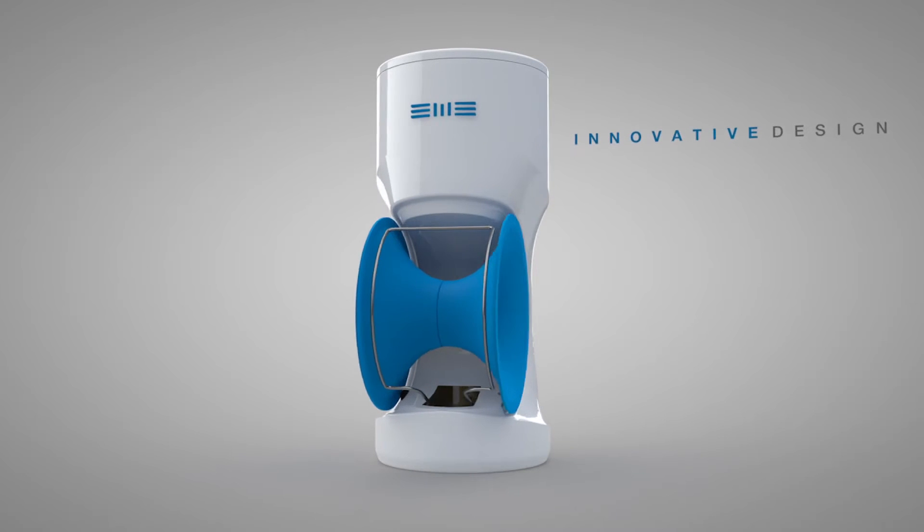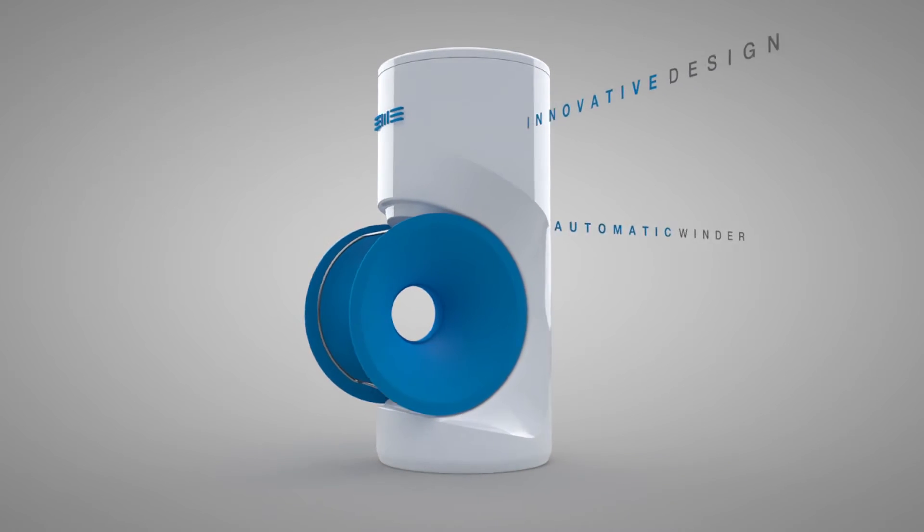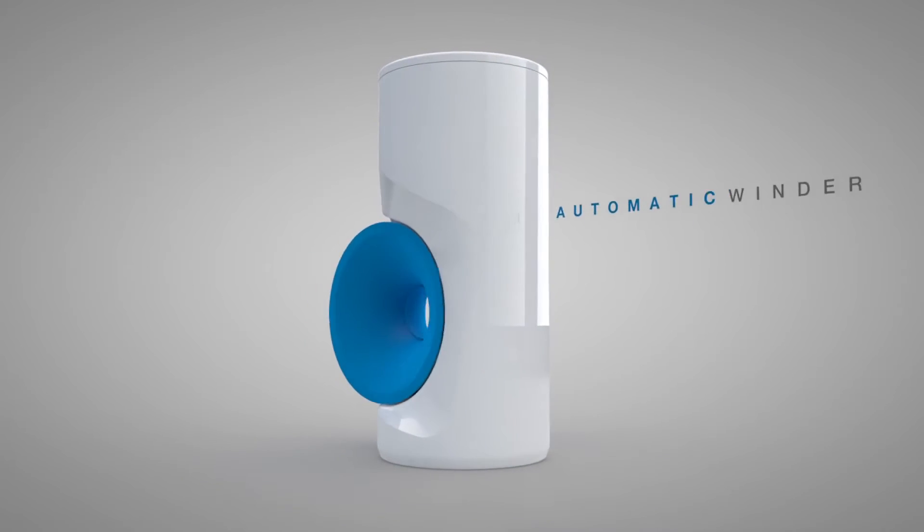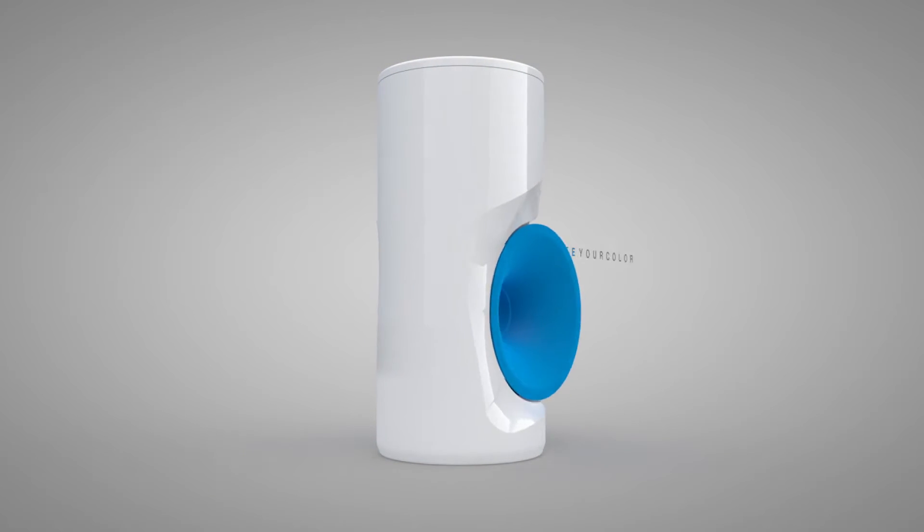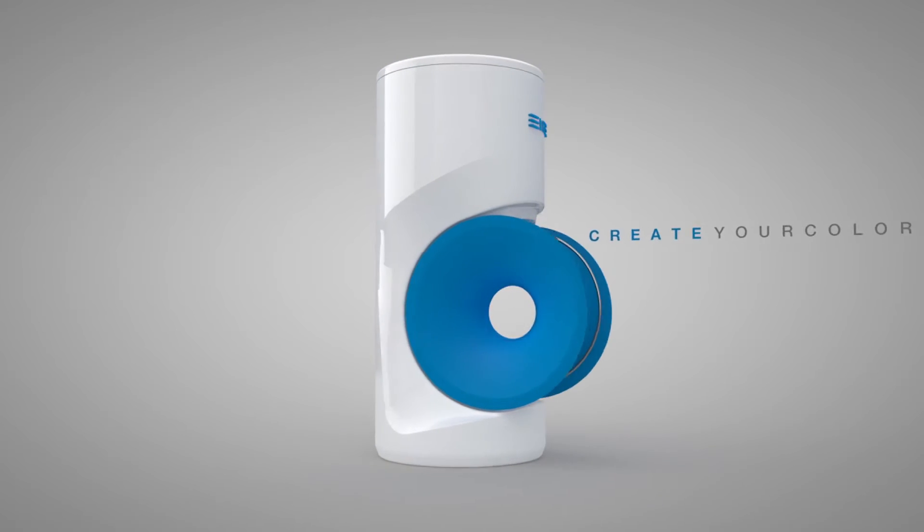EWE's filament extruder transforms plastic polymers into a filament that can then be used to create any object during the printing process.